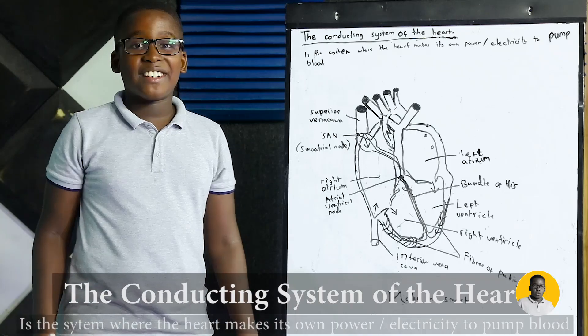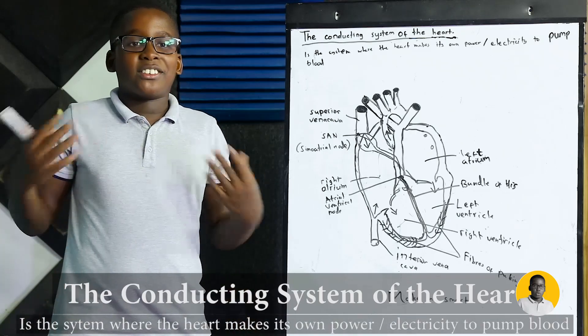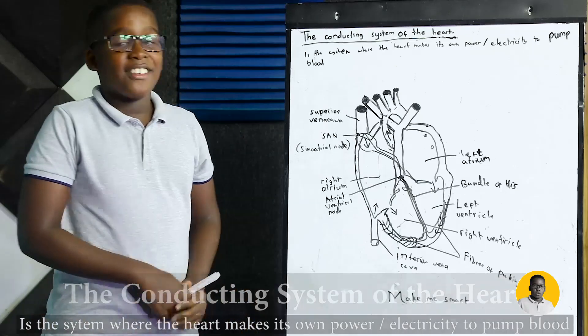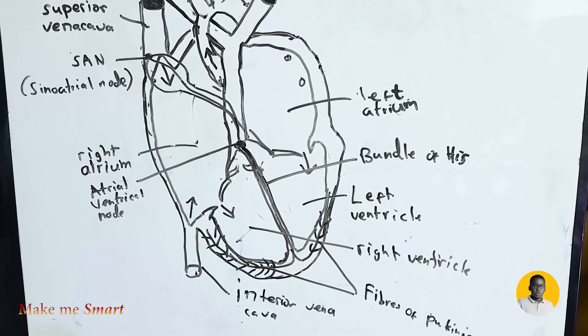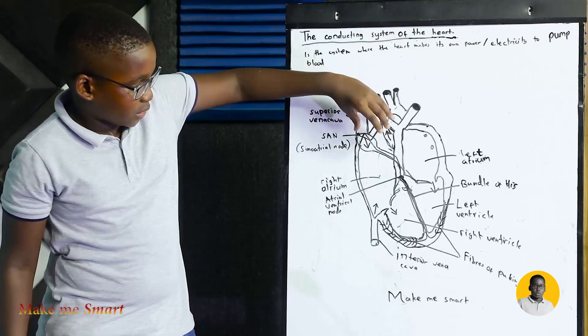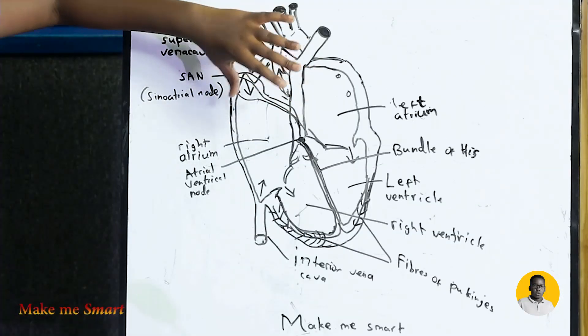It's a system where the heart makes its own electricity to pump blood. How does it work? It starts in the sinoatrial node where the sinoatrial node produces electricity through the upper chambers called atriums, the right atrium and the left atrium.